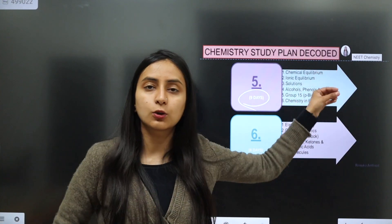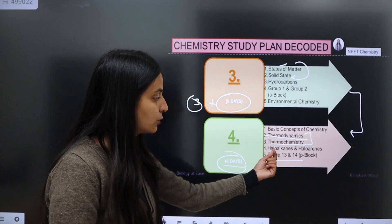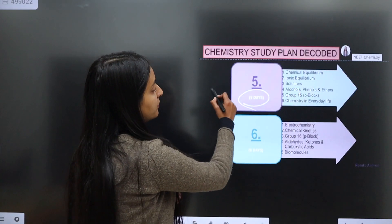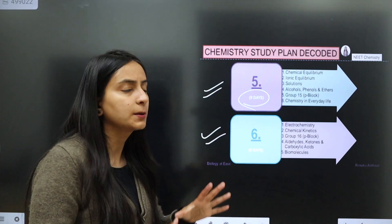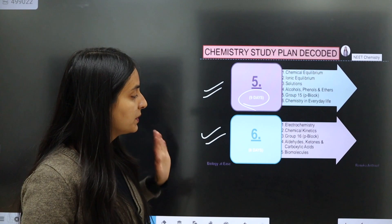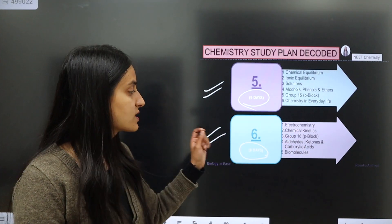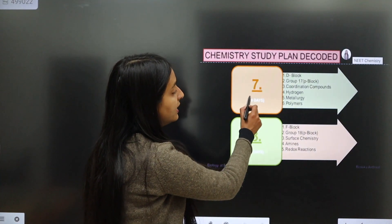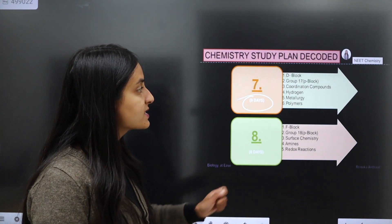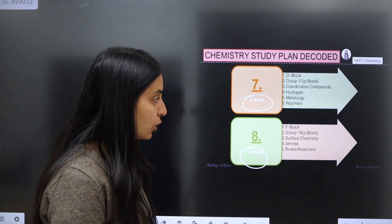Your fifth group covers p-block elements groups 13 and 14. Your sixth group — 9 days — covers electrochemistry, chemical kinetics, group 16 p-block elements, aldehydes ketones and carboxylic acids, and biomolecules. Your seventh group — 9 days — covers d-block, group 17 p-block, coordination compounds, hydrogen, metallurgy, and polymers. Your eighth and last group covers f-block, group 18 p-block, surface chemistry, amines, and redox reactions.